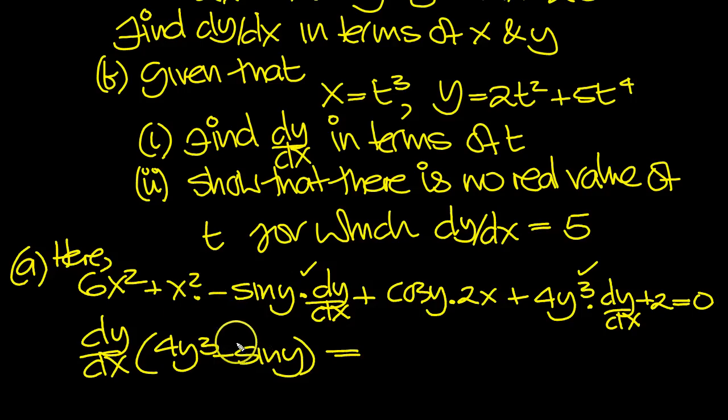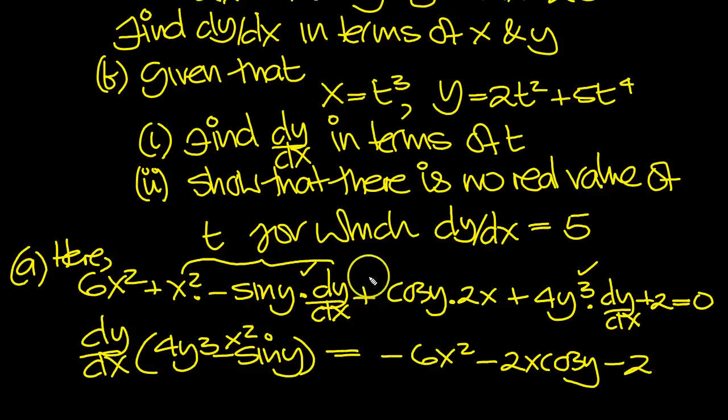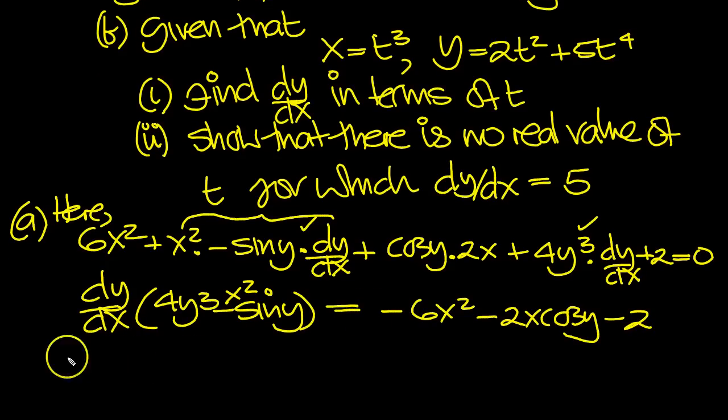We've got an x squared here as well, so I need to put in an x squared there with the sine y. So that's all of that expression here, this whole thing. So now we've got minus 6x squared, minus 2x cos y, and then minus 2. So that's good.